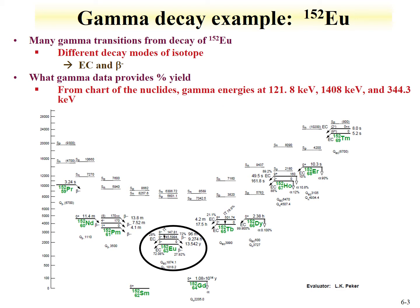Let's try to figure out what the major gammas expected from the decay of europium-152 are, and what percentage of the time those gammas occur for each decay. If you go to the chart of the nuclides, you'll see that three gammas are listed for europium-152 decay: the 121, 1400, and 344 keV lines.